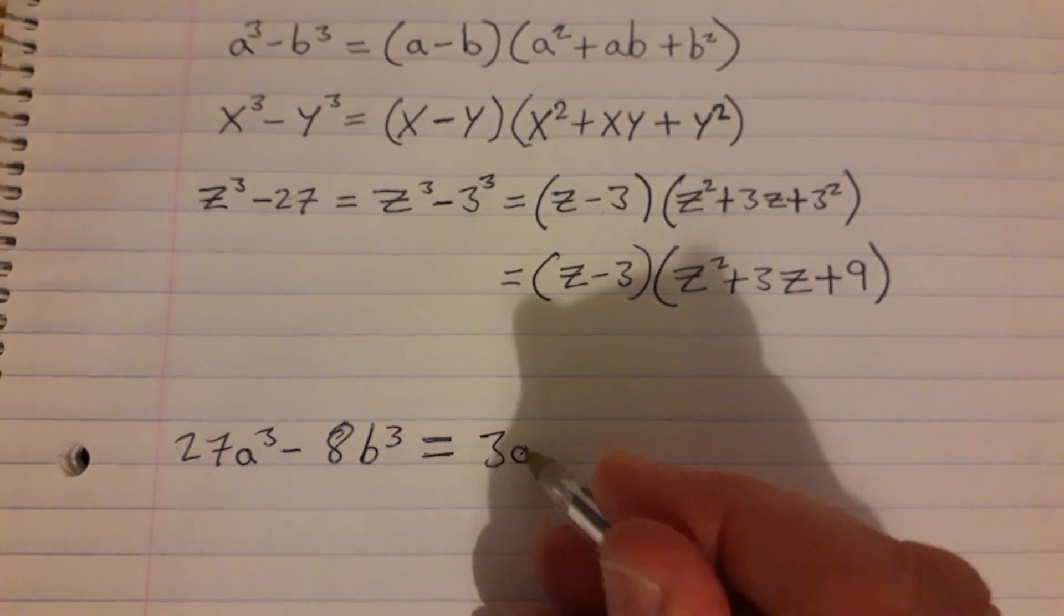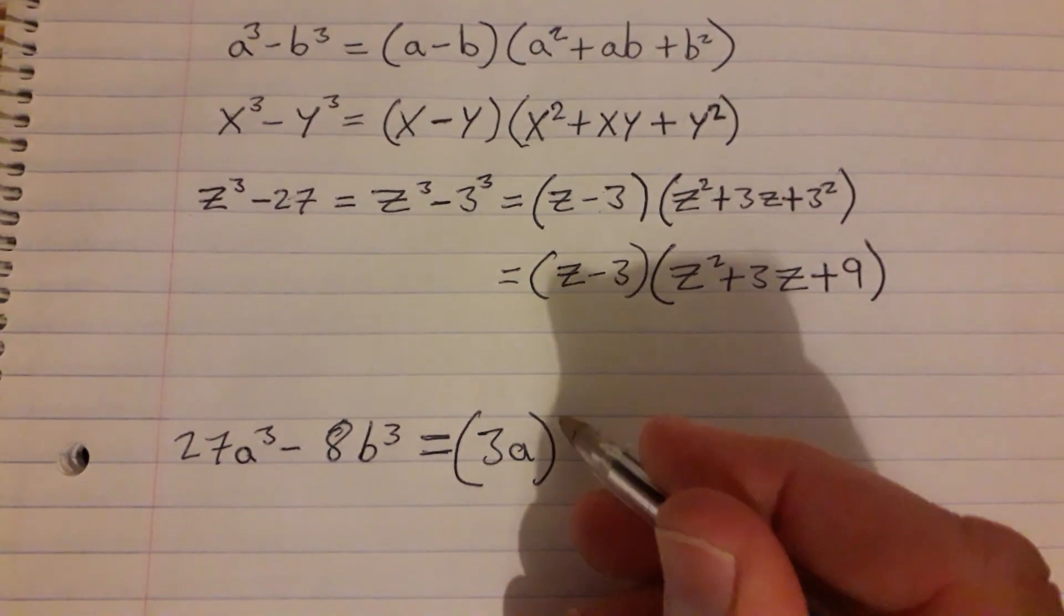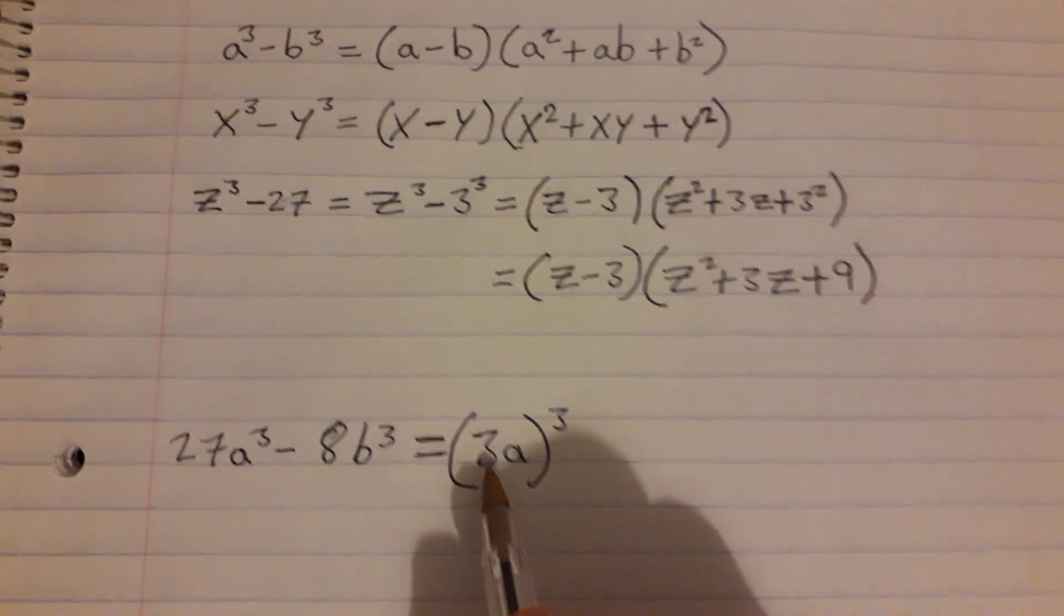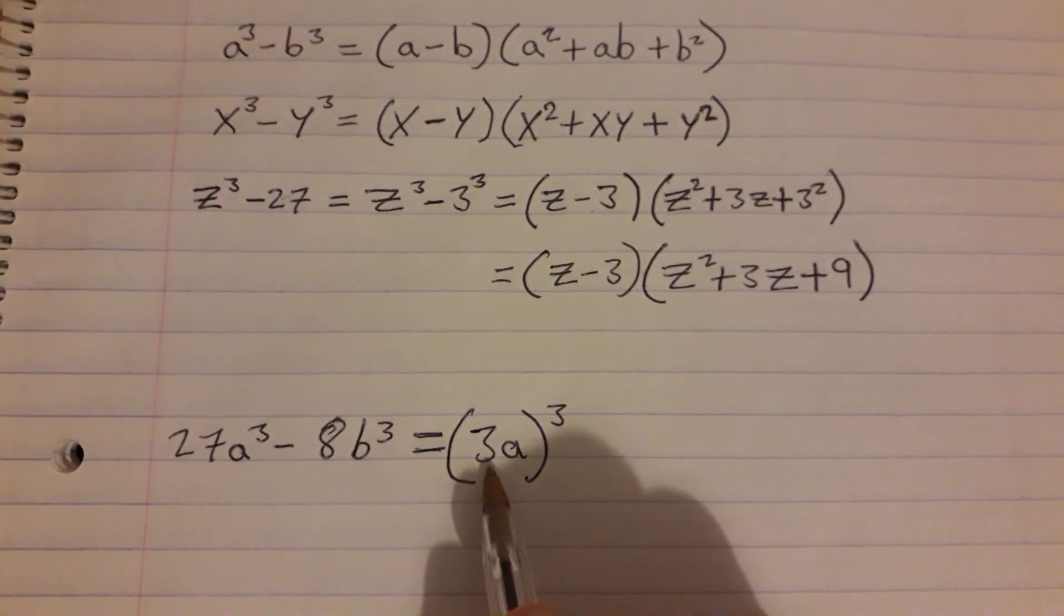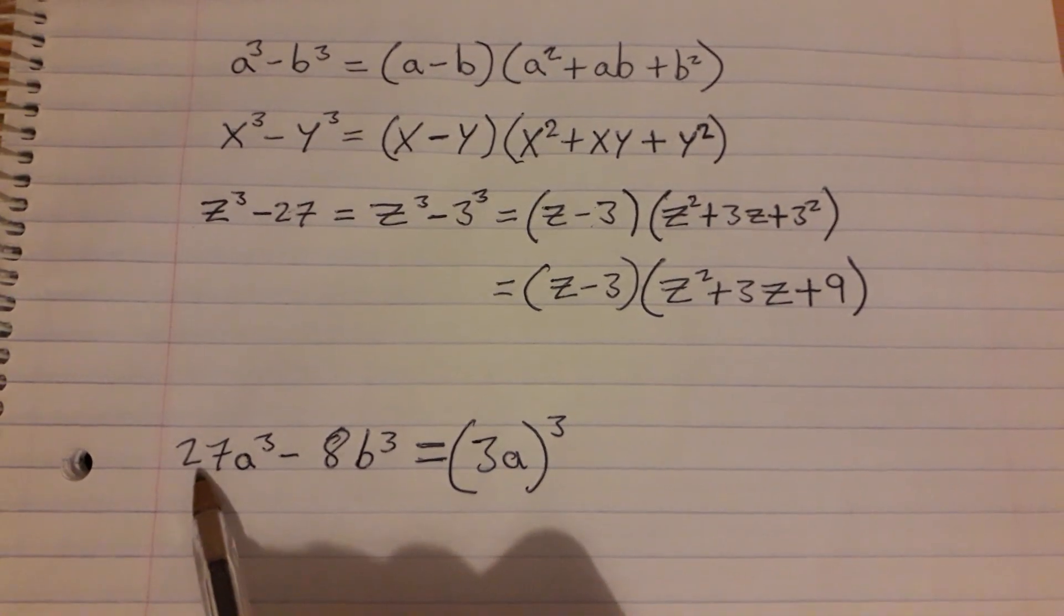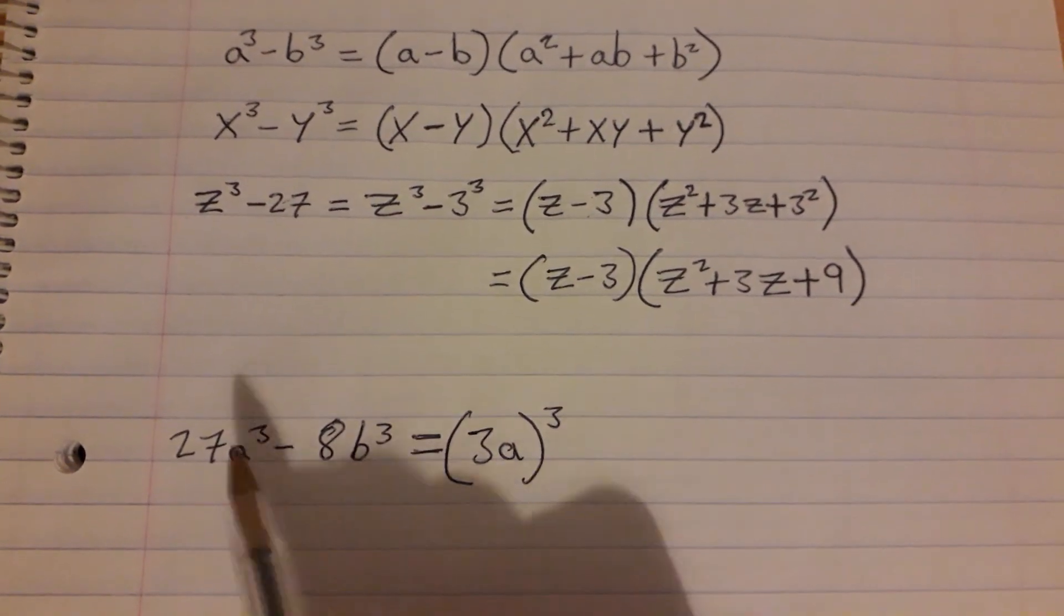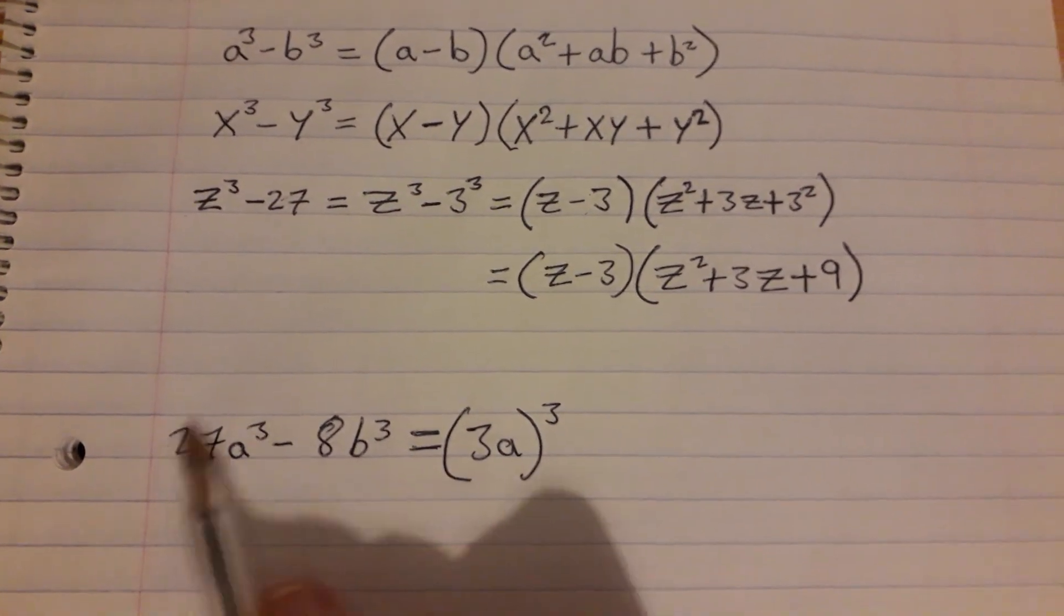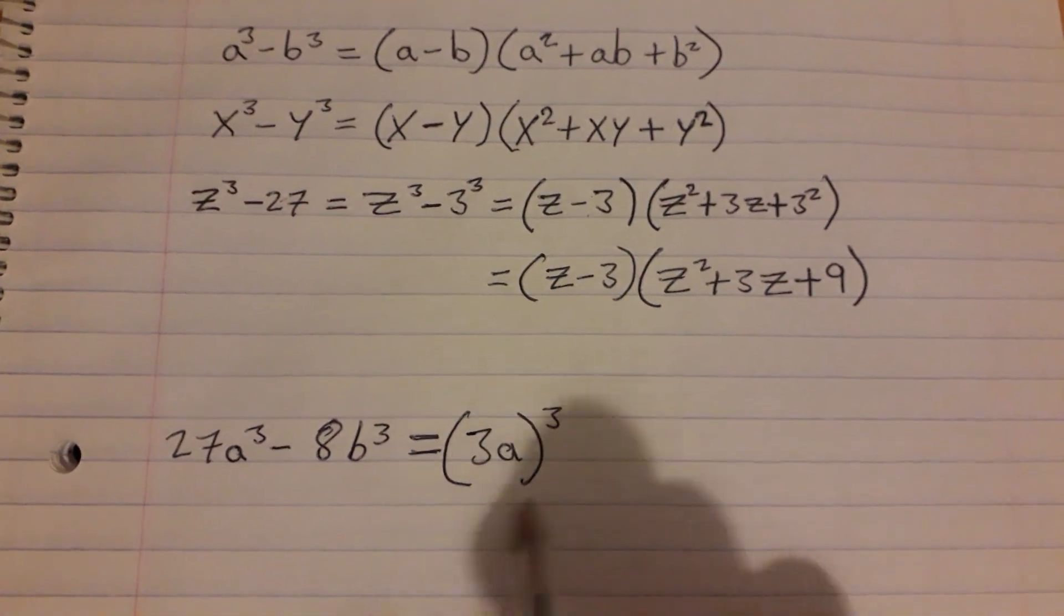So instead of writing it as 27 a cubed, we can write it as 3a all to be cubed. And so that just means 3a by 3a by 3a, and that would mean 3 by 3 by 3 will give us the 27 and the a by a by a part will give us the a cubed. So this has the exact same value as this.